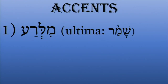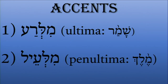There are two primary accent types, categories if you will. The first one is the Ultima, when the accent appears at the very end of the word. The second one is the Penultima, when it appears one syllable before the end of the word.